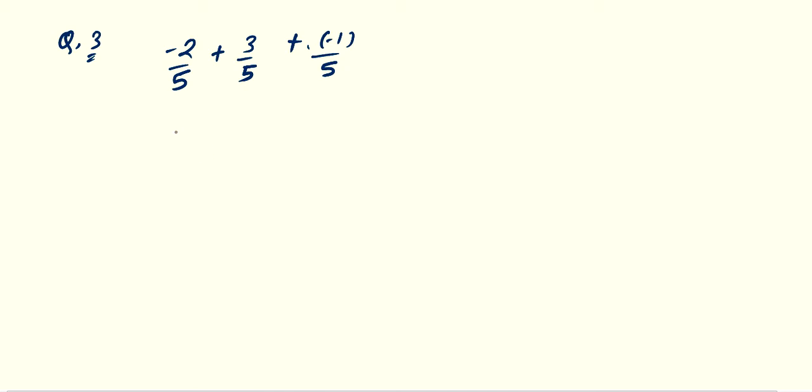So, what you have to write: minus 2 by 5 plus 3 by 5. Now, this bracket you have to remove. So, this plus sign and this minus sign - plus minus minus. So, you have to write minus 1 upon 5.